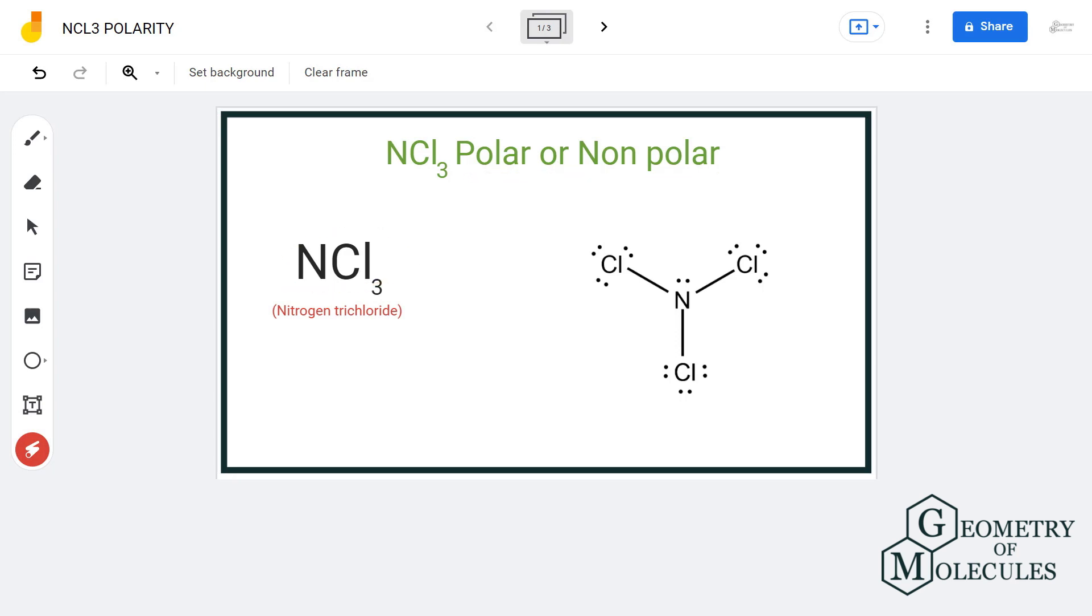It's the chemical formula of nitrogen trichloride, and to understand its polarity we will first look at its Lewis structure, followed by the electronegativity values, and then we will draw the conclusion by looking at its molecular geometry.